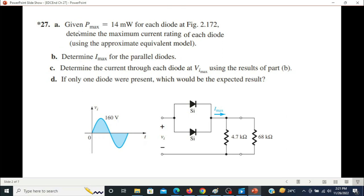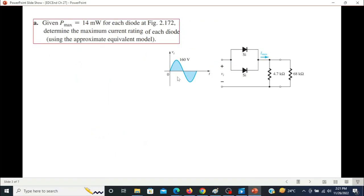The question has four parts and we'll discuss each part as we go along. The first part: given Pmax is 14 milliwatt, this is the power rating of the diode, 15 milliwatt for each diode. Determine the maximum current rating for each diode. So we have to find the current rating of the diode when power rating is given.